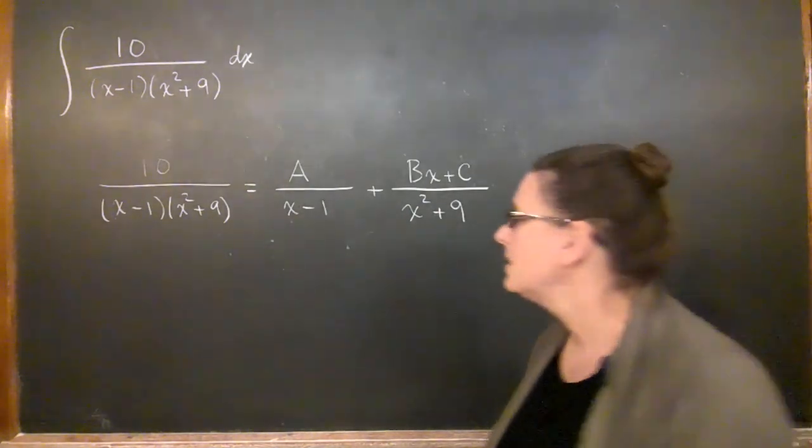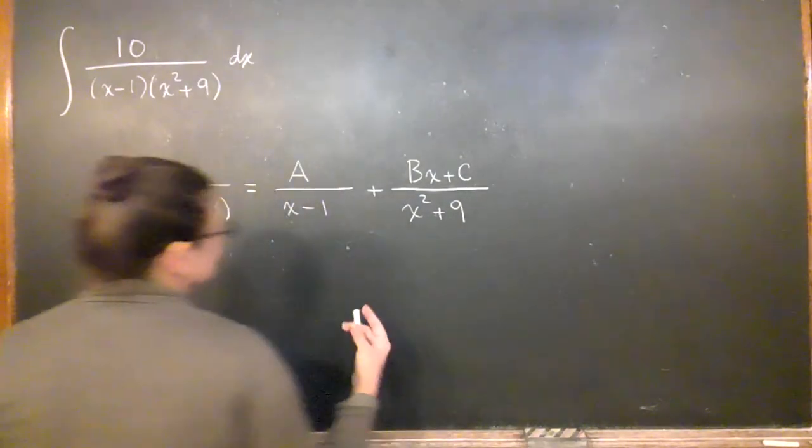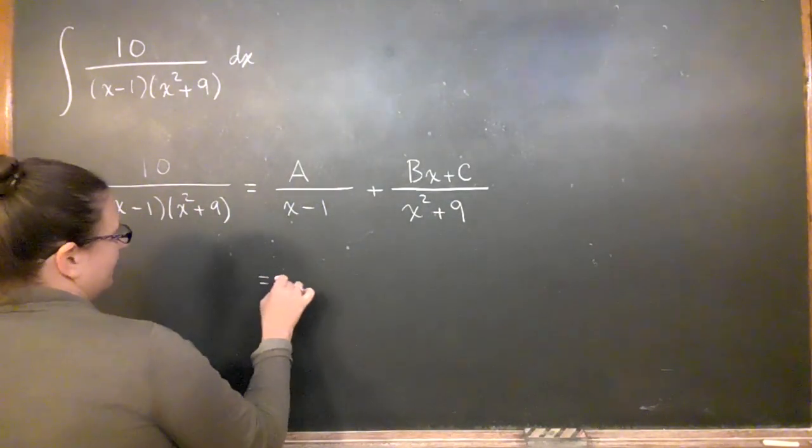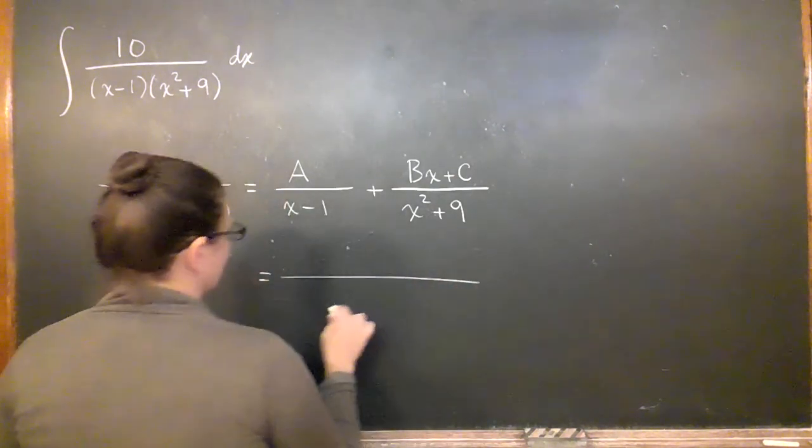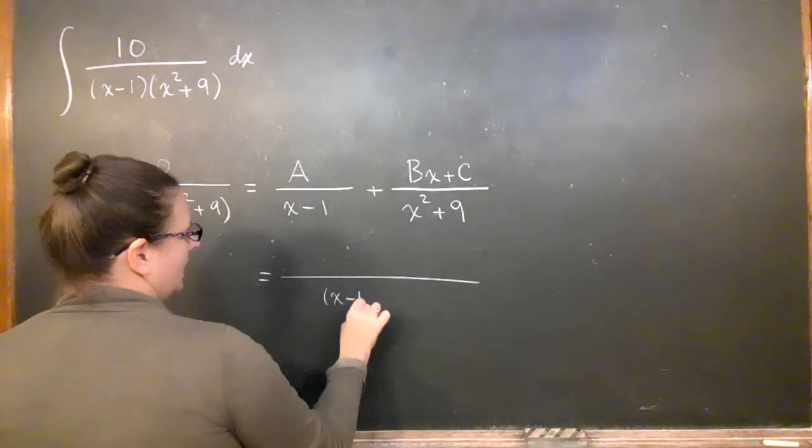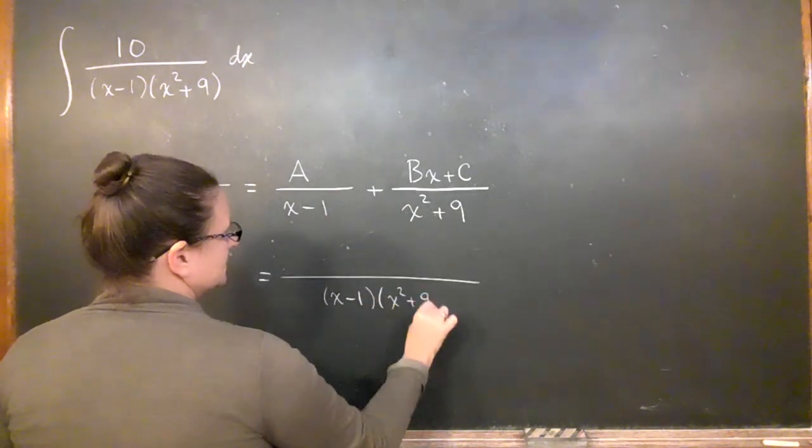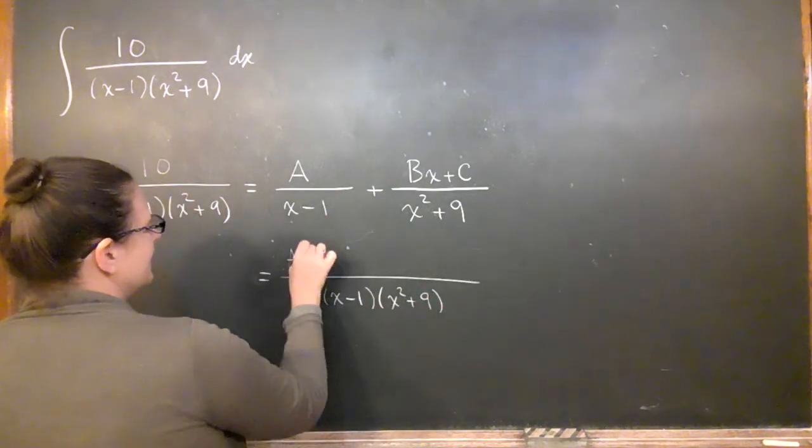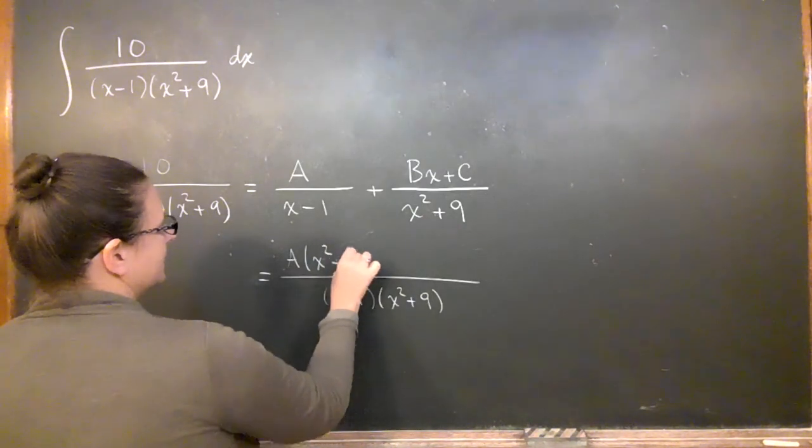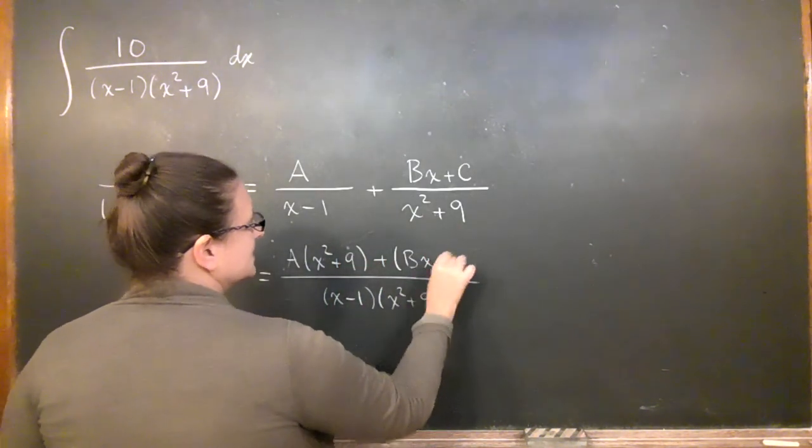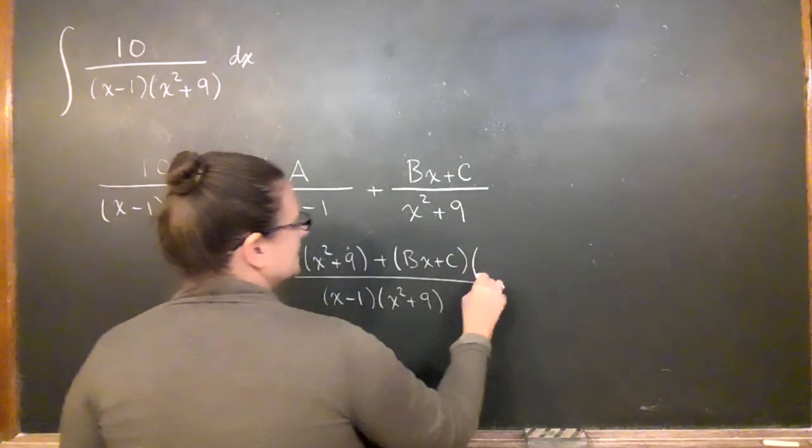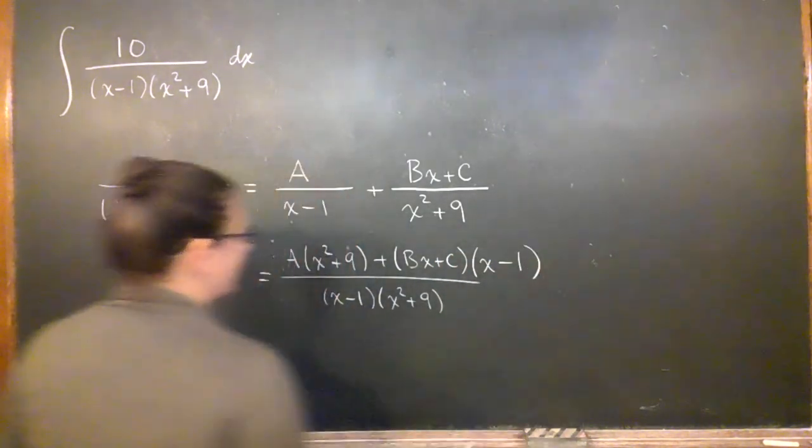Okay, but this part isn't too bad because we've seen with three coefficients, it's not terrible. And here, what do I have? x minus 1, x squared plus 9. So I have a times x squared plus 9 plus bx plus c times x minus 1.